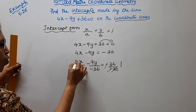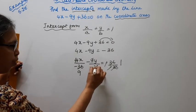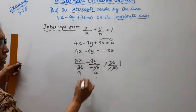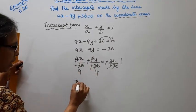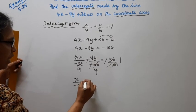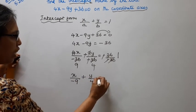Now simplifying: 4 into 36 is 9, and 9 into 36 is 4. The minus signs cancel, giving us x by minus 9 plus y by 4 equal to 1.